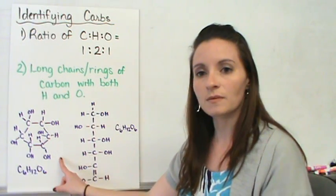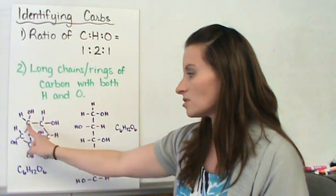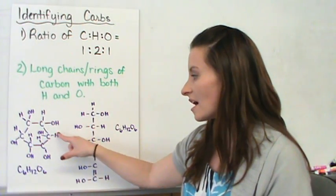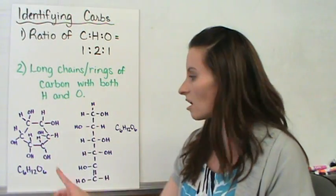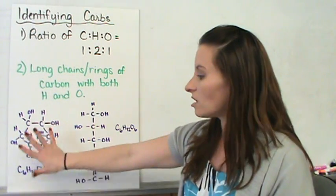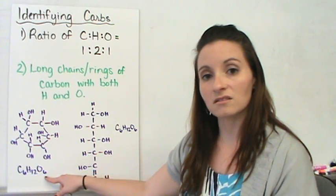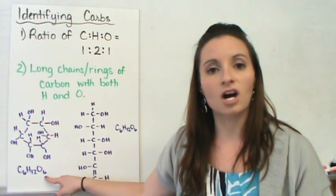I've got two pictures up here. This is a chain of carbon, and if you notice coming off of each of these, we have hydrogen and oxygen off of each one of these carbons. If you count them all up, we have 6 carbons, 12 hydrogens, and 6 oxygens, which actually make this a carbohydrate.